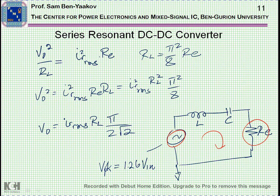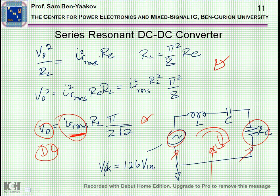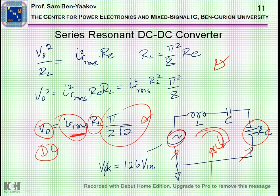With this equivalent circuit, you can express the DC output voltage as a function of the RMS current that flows in the circuit. The output DC voltage is a function of the RMS current — which is now very easy to calculate — times RL times some constant. By this you can predict your DC output or use it to design the circuit. The bridge generates the square wave, this is the resonant part, and we have the load.